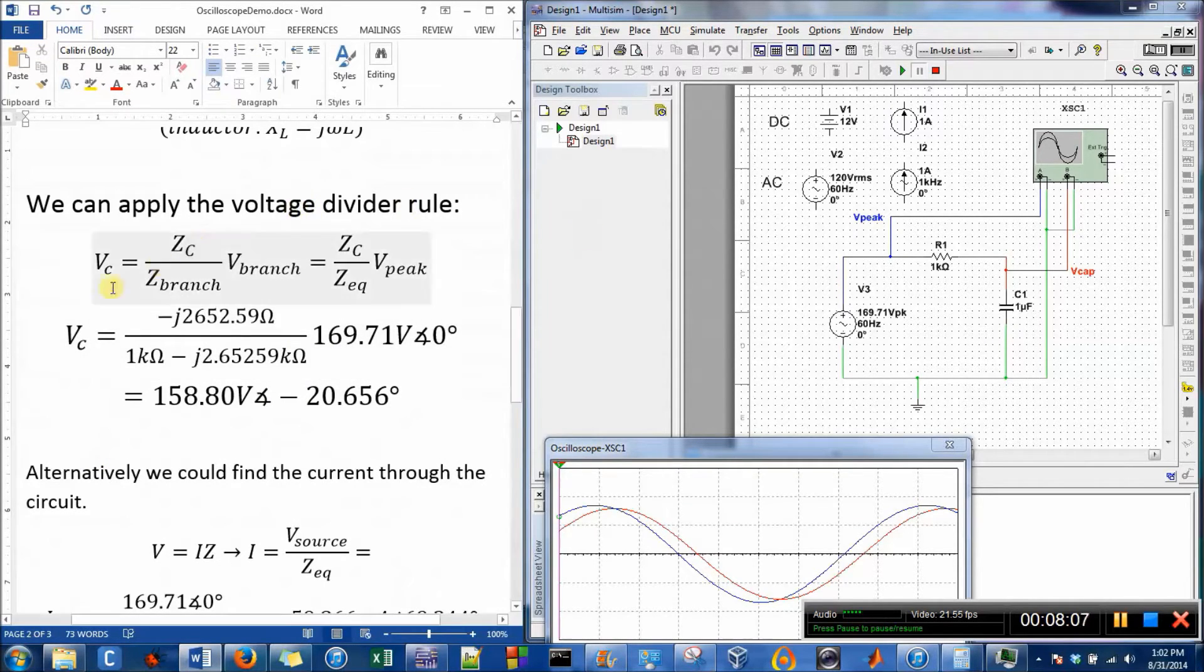The voltage divider rule says voltage and resistance are in the same ratio as each other. The voltage is going to divide evenly across this in the same ratio of their parts. We find the equivalent resistance of the branch and then the resistance of the part and multiply it by the whole circuit.